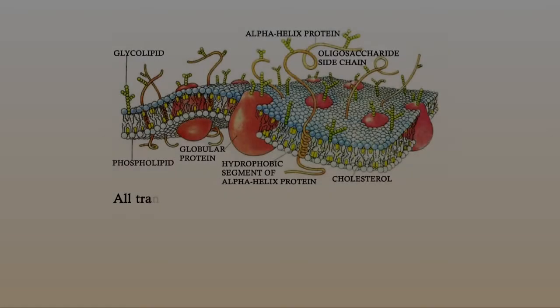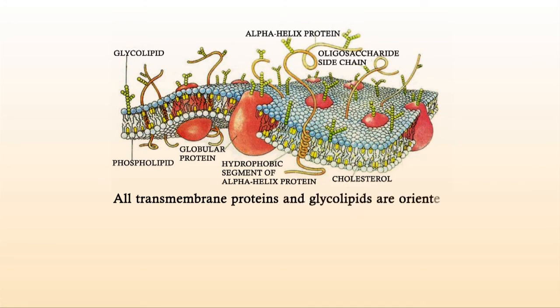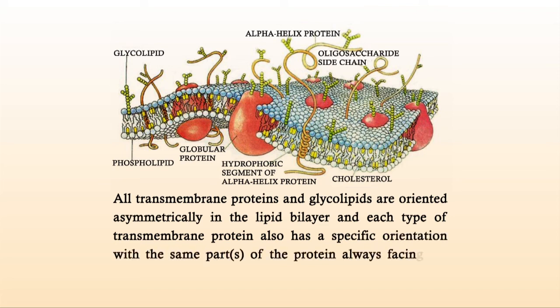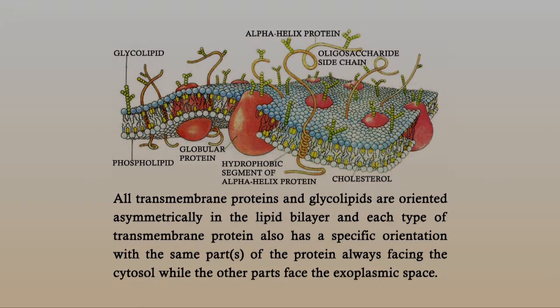Porins represent a large family of proteins that form pores on the membrane by bonding trimers of beta-barrels. All transmembrane proteins and glycolipids are oriented asymmetrically in the lipid bilayer, and each type of transmembrane protein also has a specific orientation — with the same part of the protein always facing the cytosol while the other part faces the exoplasmic space. Such asymmetry is established during biosynthesis and insertion into the membrane and is usually maintained throughout the lifetime of the protein. Unlike lipid molecules, membrane proteins have never been observed to flip-flop across the membrane, since the transient movement of hydrophilic amino acid residues through the hydrophobic interior during flip-flop movements is energetically unfavorable.